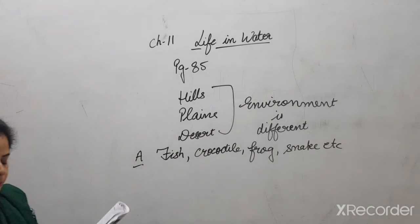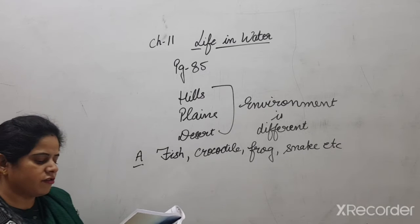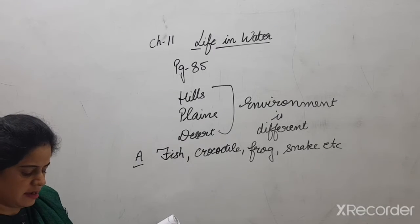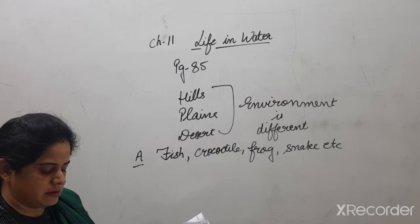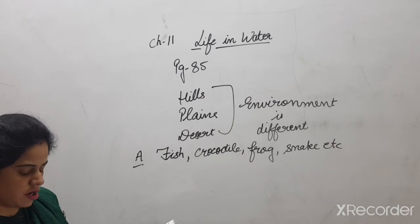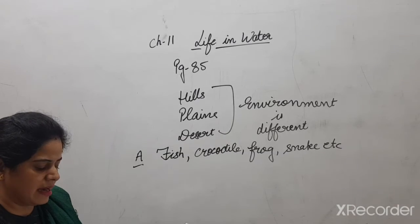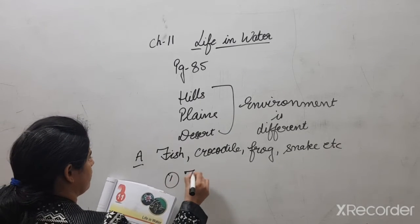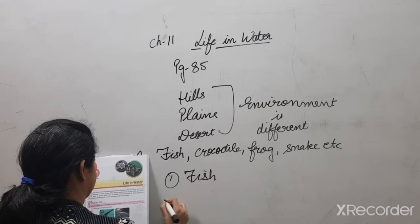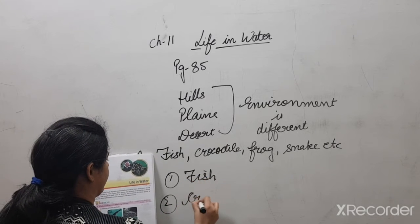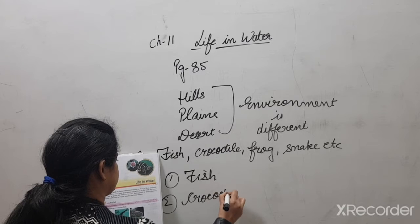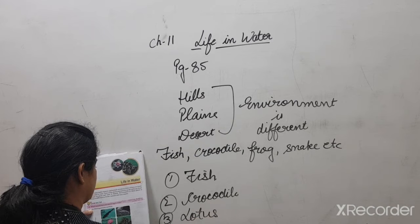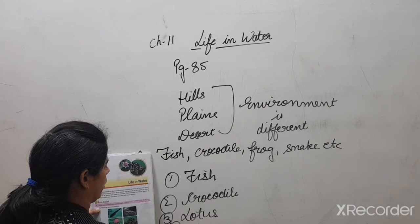Now let's look at water plants and animals. The first picture is of fish. The second picture is of crocodile. The third picture is of a lotus flower. And the fourth picture is of a tortoise.